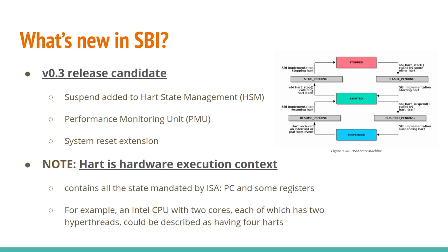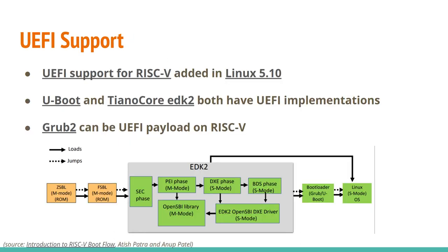If you're not familiar with the term hart, it's a term used in RISC-V to mean a hardware execution context. It contains all the state mandated by the ISA — the program counter and certain registers. For example, you can think of an Intel CPU with two cores with hyperthreading on each as essentially four harts. If we have a RISC-V processor with four harts, we would have four schedulable processors — or four penguins when our system boots up.